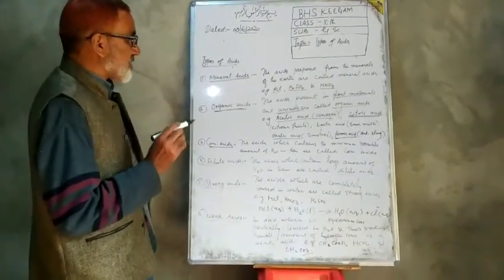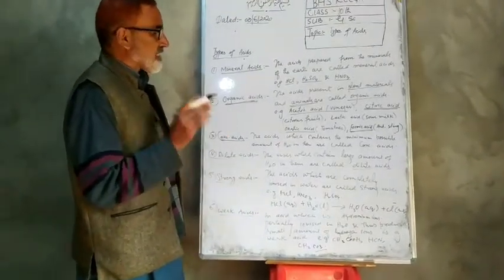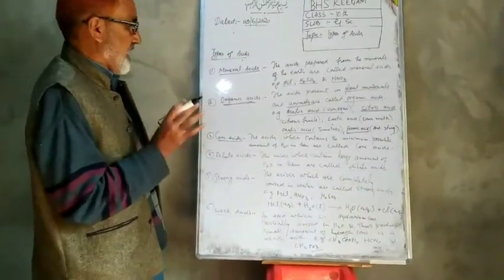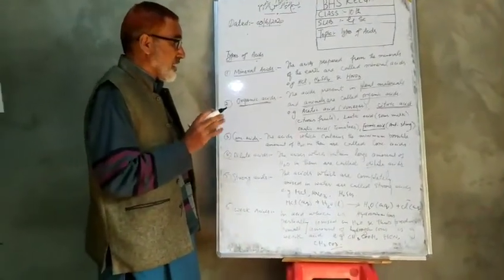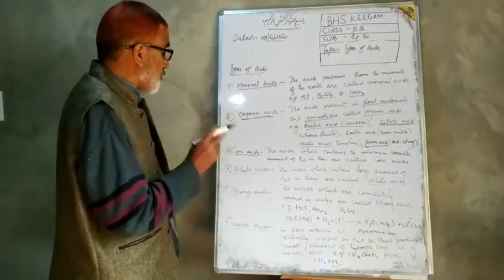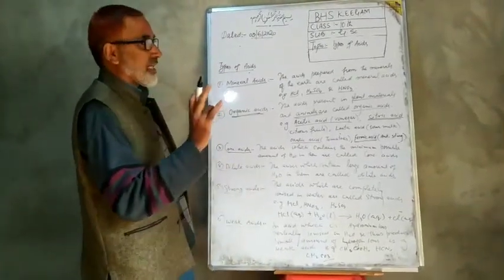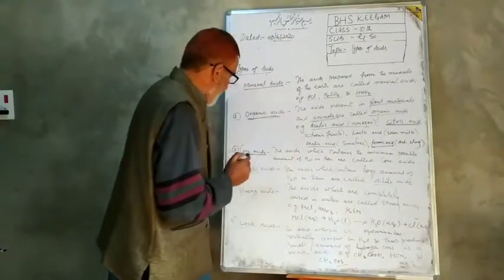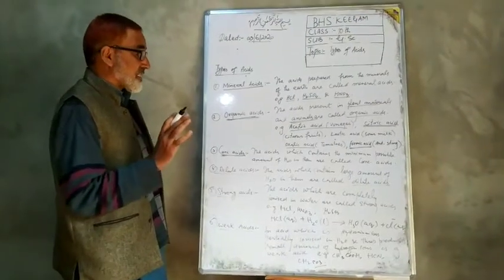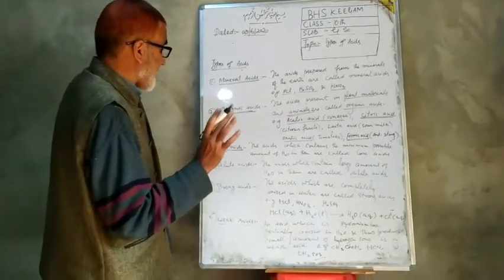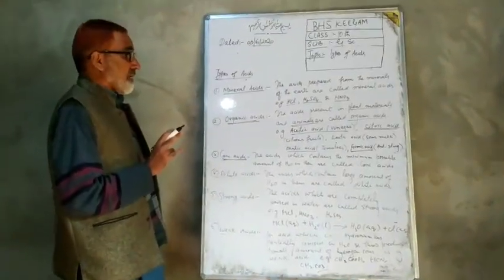The acid which contains the minimum possible amount of water is called concentrated acid. It is dangerous, so if you are practicing in the laboratory, you must distinguish between concentrated acid and dilute acid.